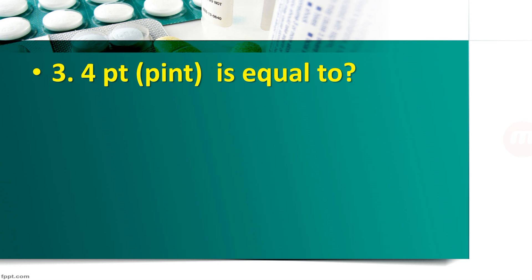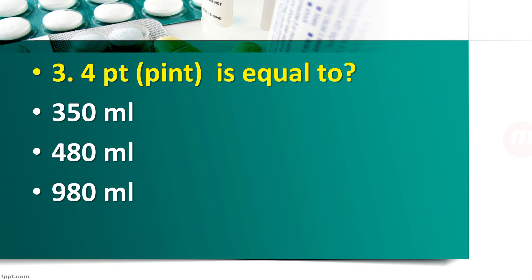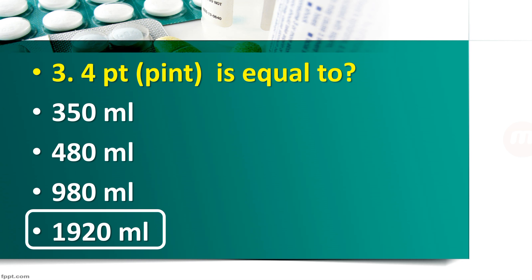Question number 3: 4 pint is equal to — 350 ml, 480 ml, 980 ml, or 1920 ml? The right answer is 1920 ml. 1 pint is equal to 480 ml. The question is about 4 pint, so you have to multiply 480 into 4, and you will get the answer 1920 ml.